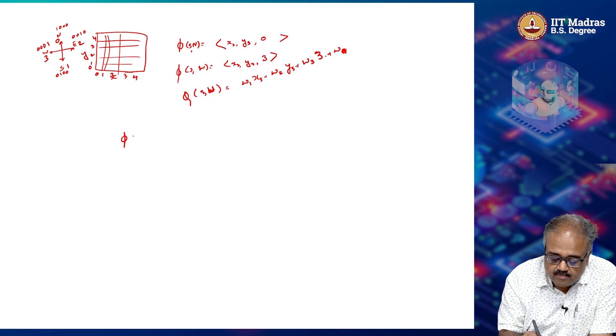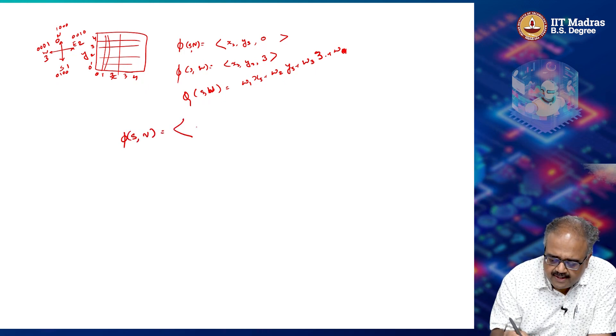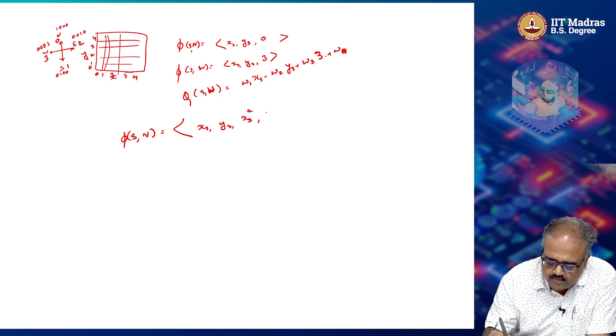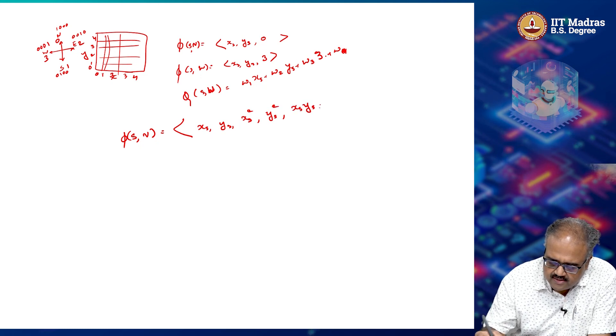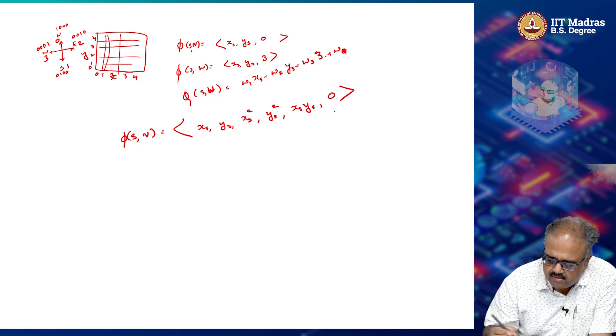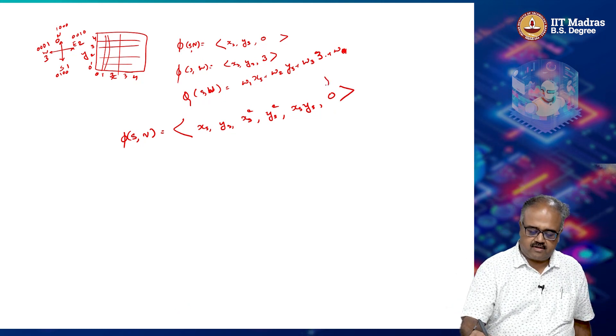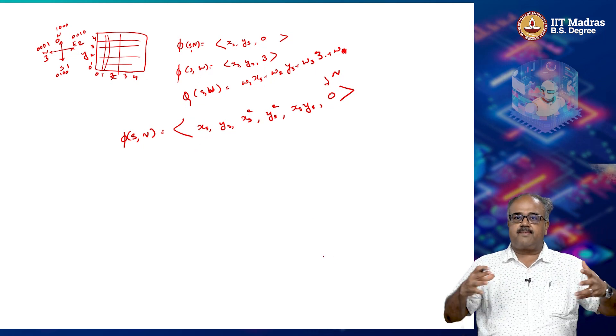So for example, my phi of s comma n could very well be x s, y s, x s squared, y s squared, x s, y s and 0. The 0 comes because that is the action. So the 0 is for the north action. And this is essentially the feature expansion of my states.